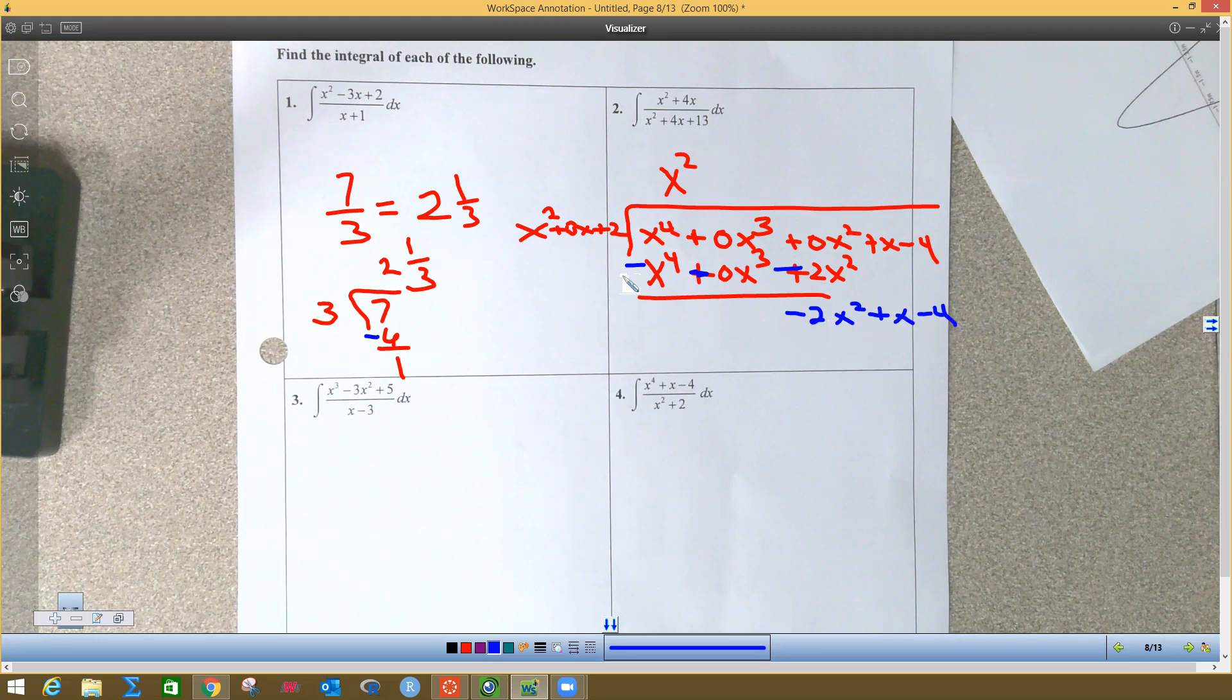And then you got to ask yourself, what times x squared gives me negative two x squared? And I would be a negative two. And then I distribute negative two to all of that stuff.